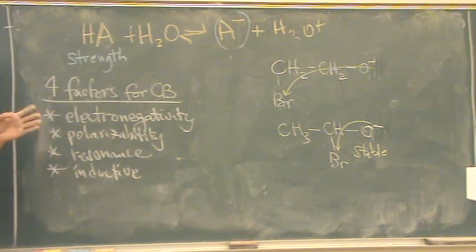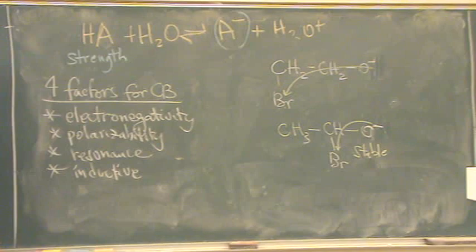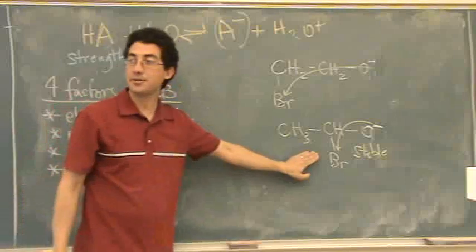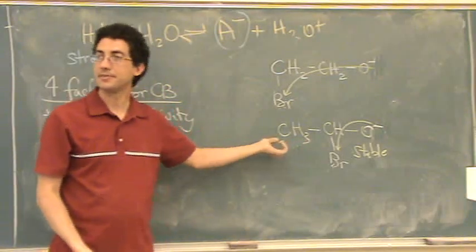So this one is actually going to be more stable because there's a halogen closer to the minus charge that will woo that minus charge and spread it out over the molecule. So, and because the charge is spread out and not localized or what we call delocalized, this is more stable, so the original acid was stronger.